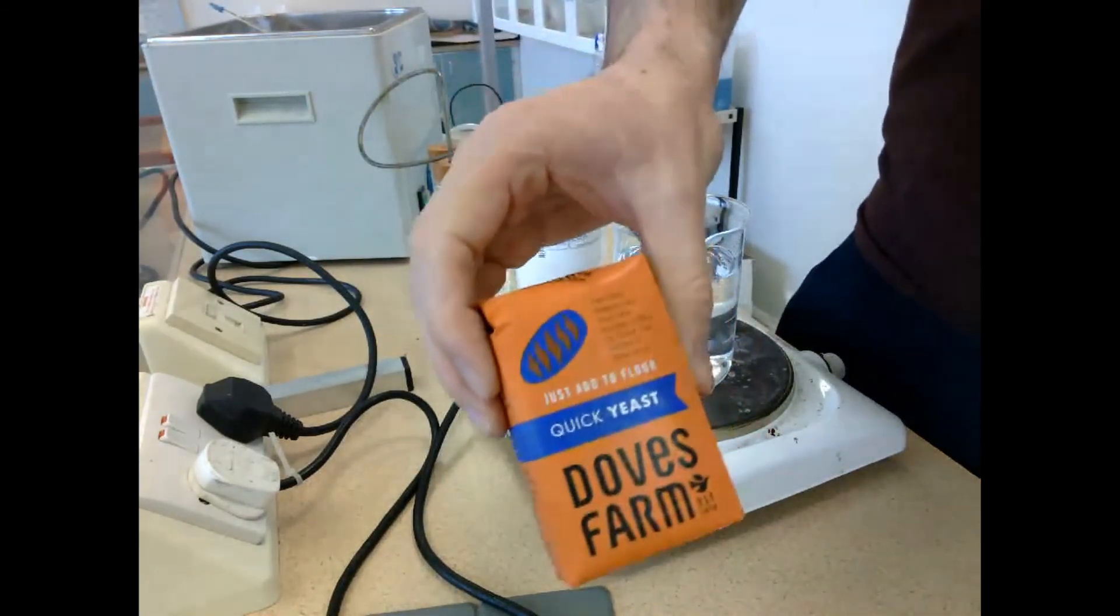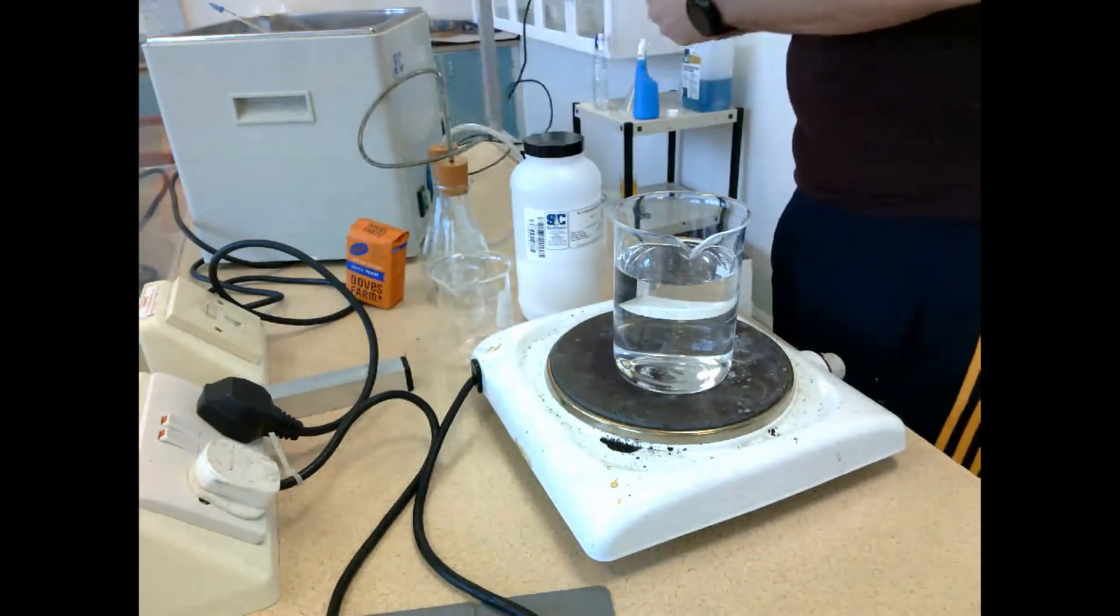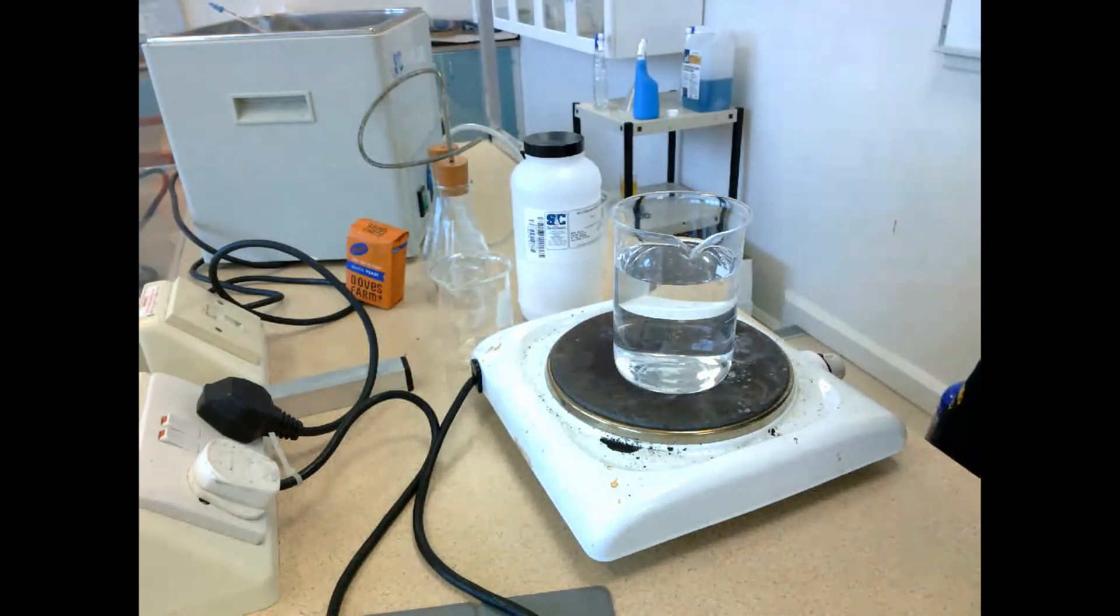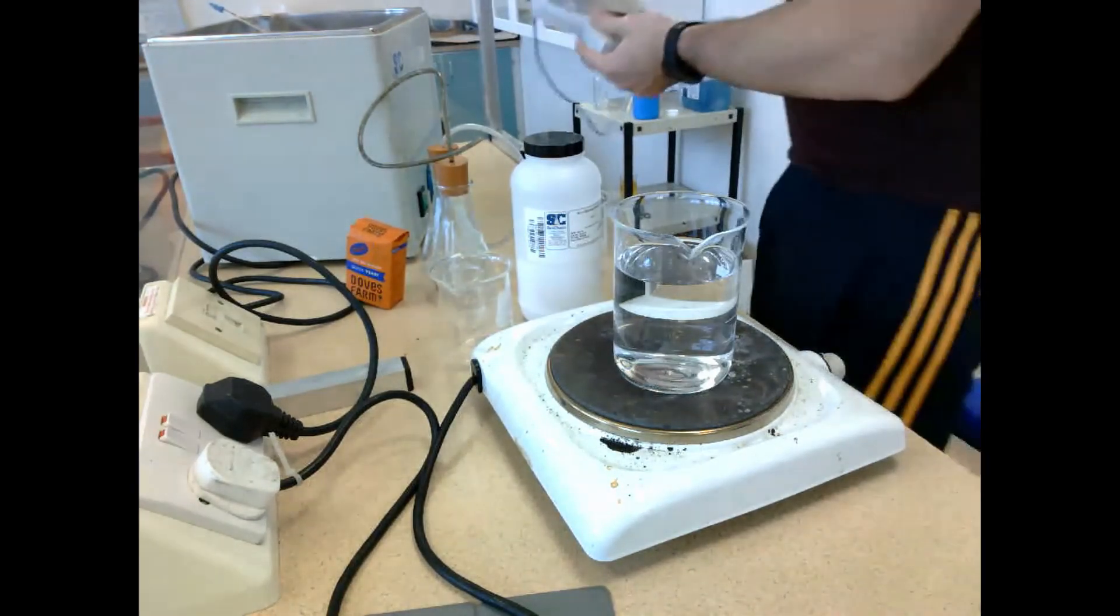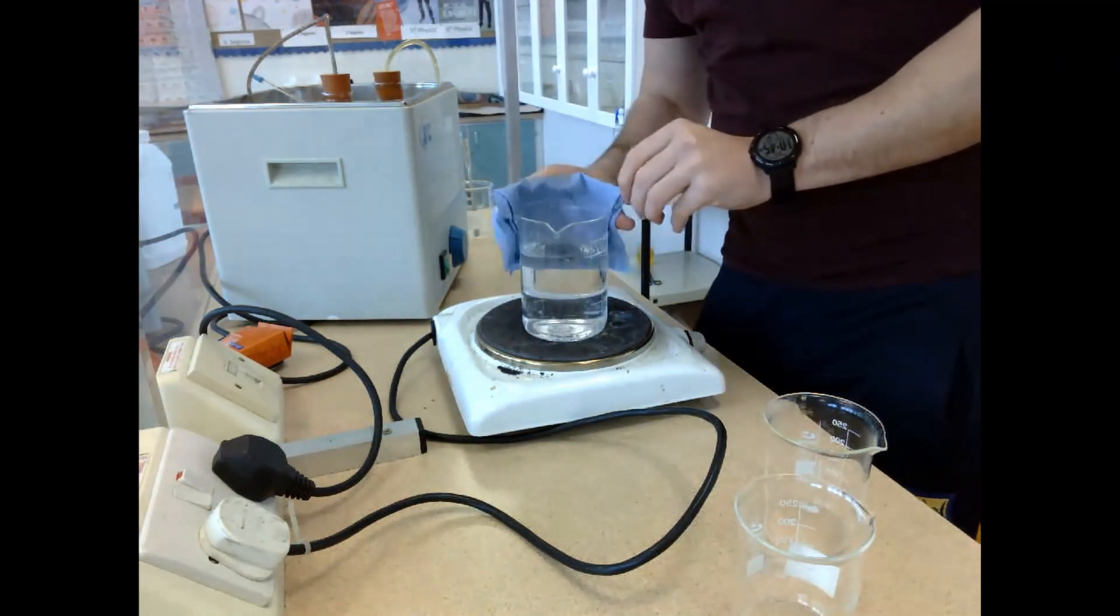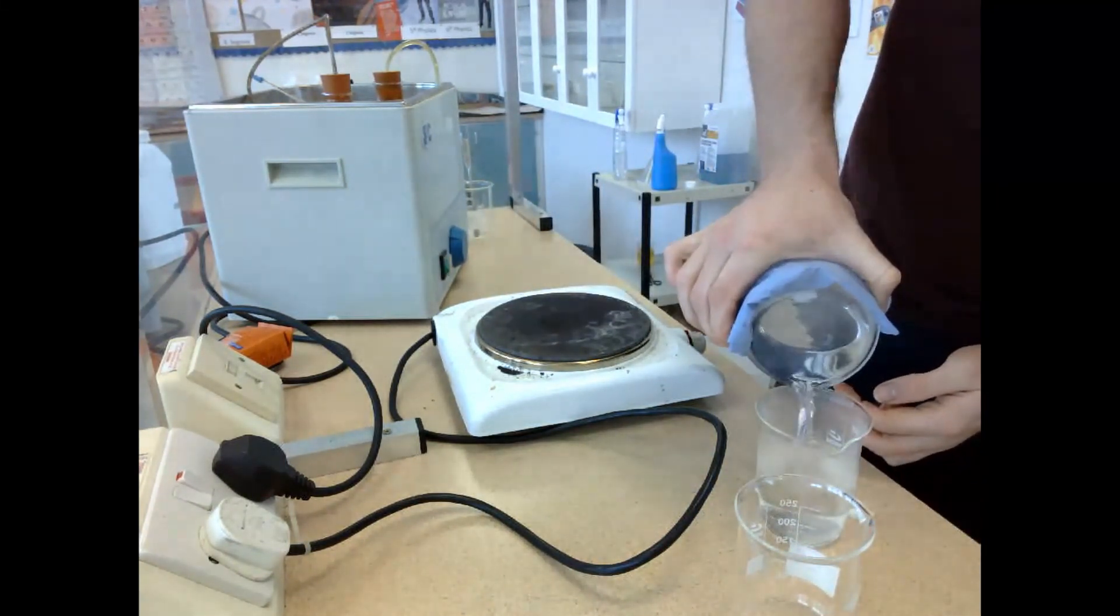In this experiment, we're going to use yeast to produce alcohol by putting it in an anaerobic situation, i.e., there is no oxygen. Then it will break down the glucose that is present to form ethanol and CO2.